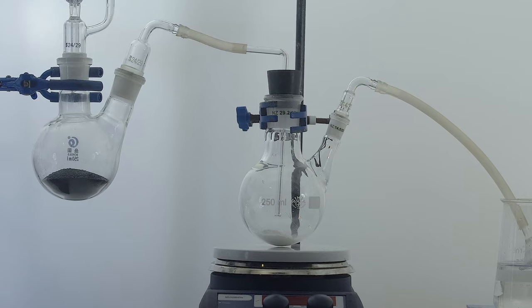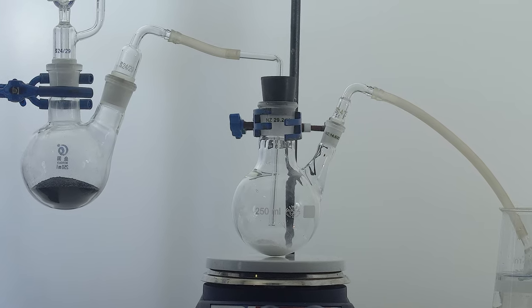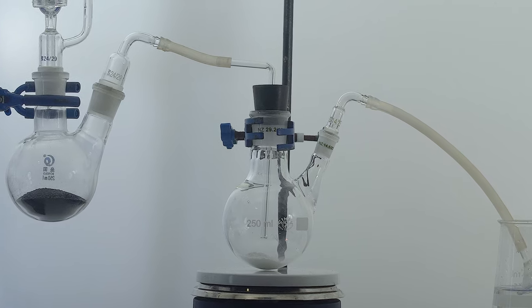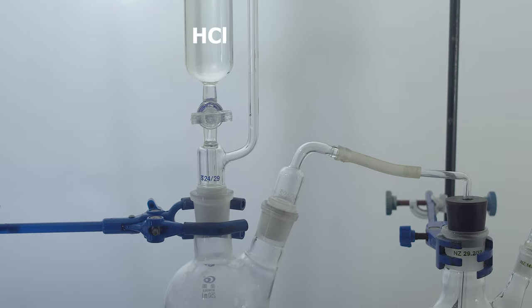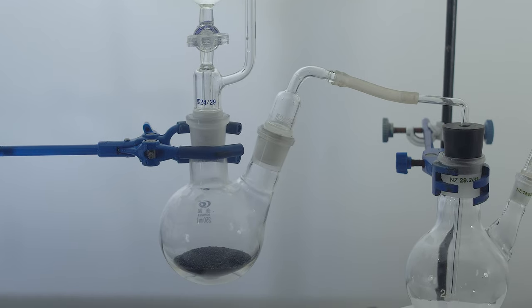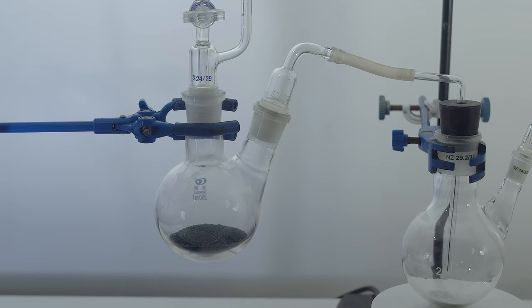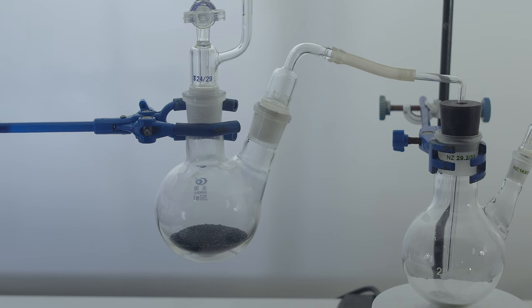Lead tetrachloride can be acquired from chloroplumbic acid, that results from bubbling chlorine in the solution of lead dichloride in hydrochloric acid. This setup for synthesis includes a flask with potassium permanganate, where we'll produce chlorine, and then we'll feed it into another flask with lead dichloride and hydrochloric acid.